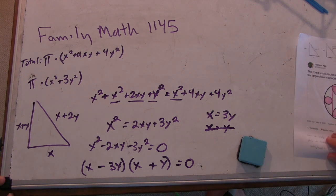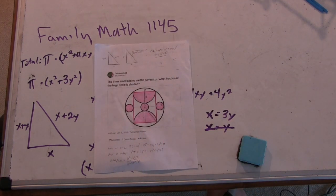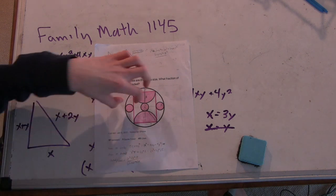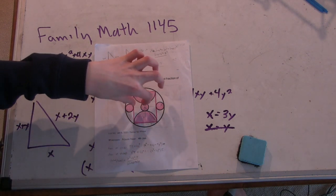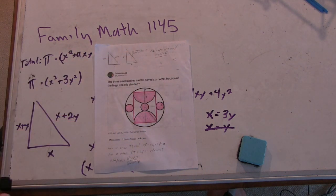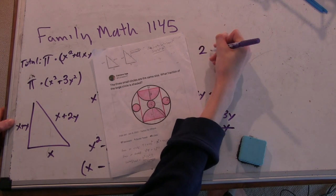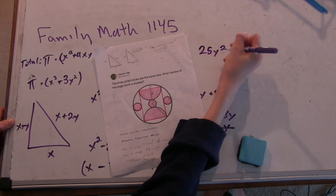Okay. All right, so you know x is 3y. So then our radius of our large circle, which was x plus 2y, now becomes 5y. And so our total area would be 25y squared.